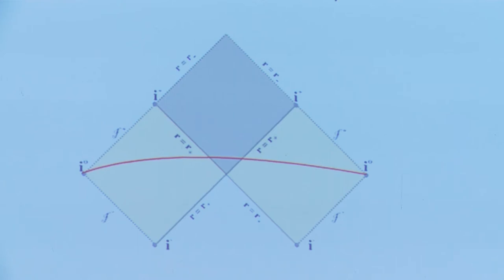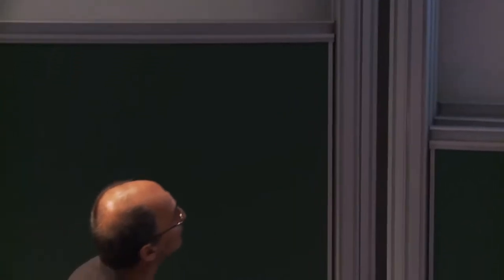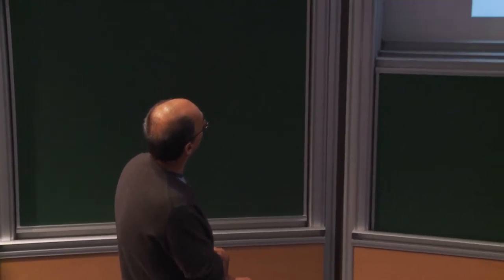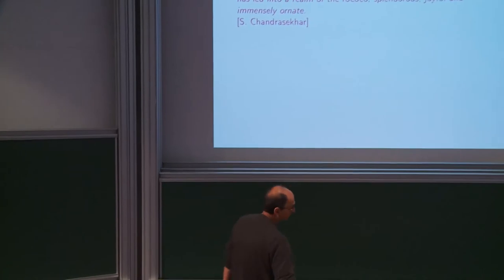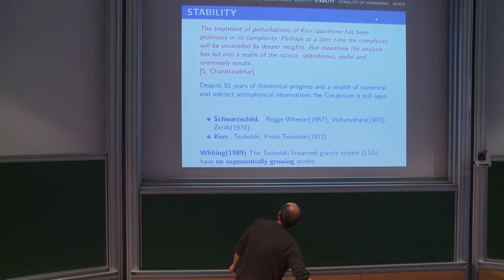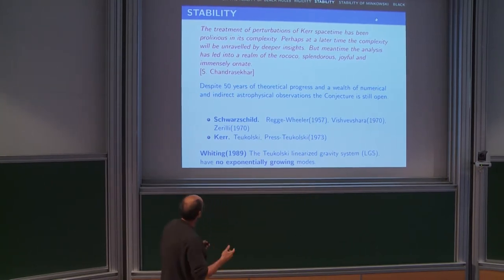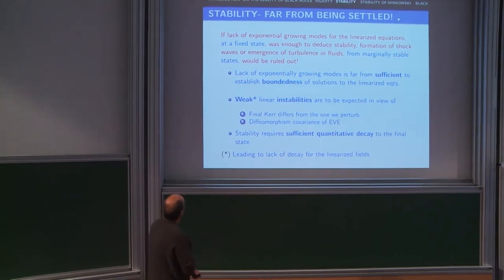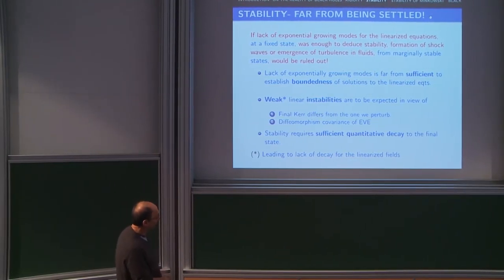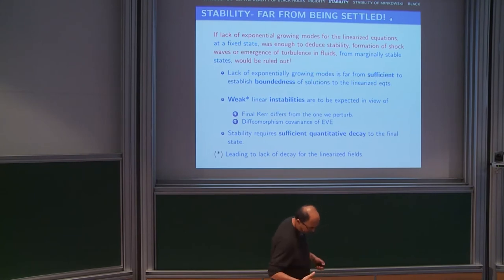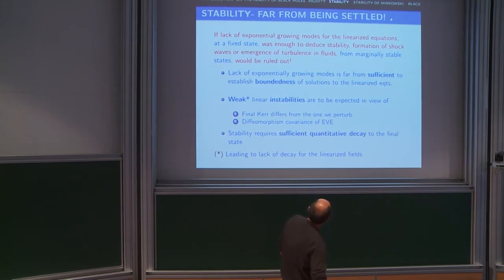A statement I made last time was that lack of exponential growing modes is not enough to conclude anything about nonlinear stability. As an example, I mentioned the emergence of black holes or turbulence.